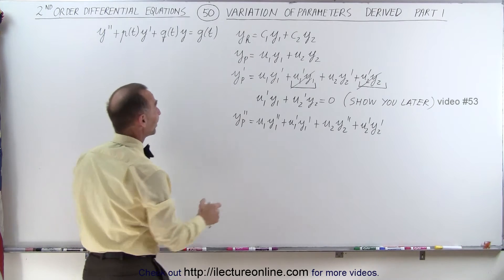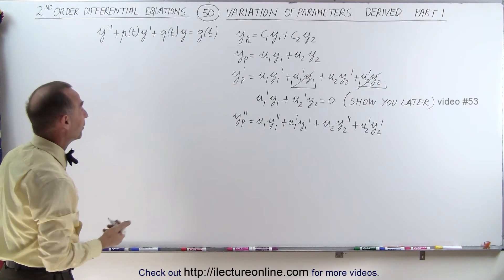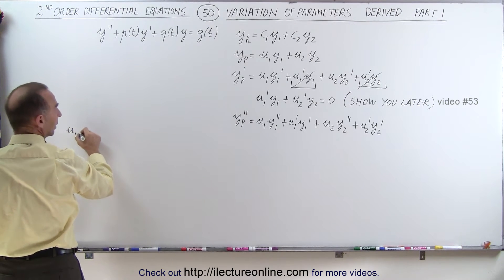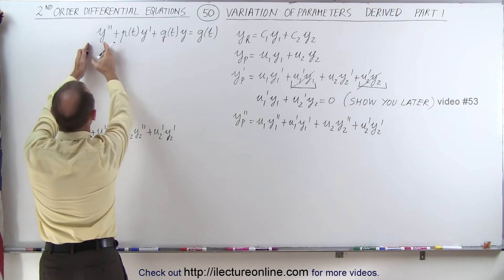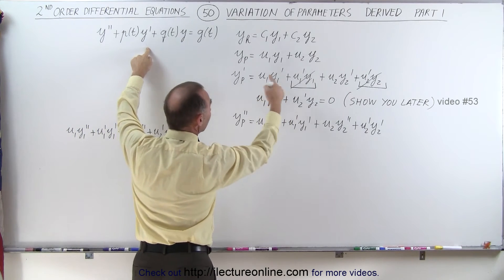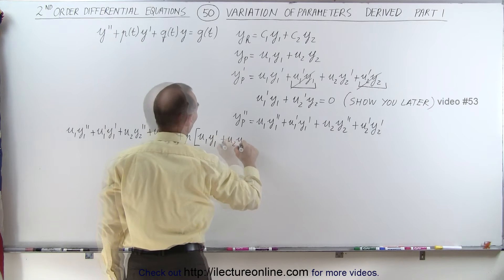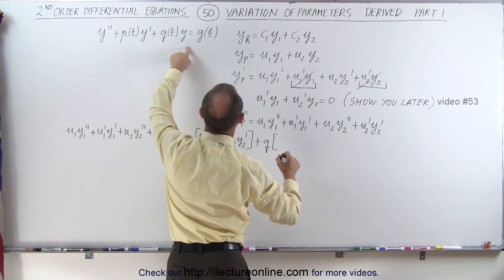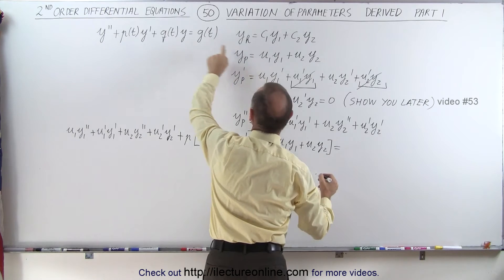Now what we need to do is plug the first derivative and the second derivative into the equation. That's a lot of work and it's going to take a lot of board space, but we'll work through it. So y double prime is u1 times y1 double prime plus u2 prime y2 prime. Then plus p times y prime — and I claim that the two terms from the first derivative that we set to zero just leave u1 y1 prime and u2 y2 prime — plus q times y, which is u1 y1 plus u2 y2, and the whole thing is set equal to g of t.